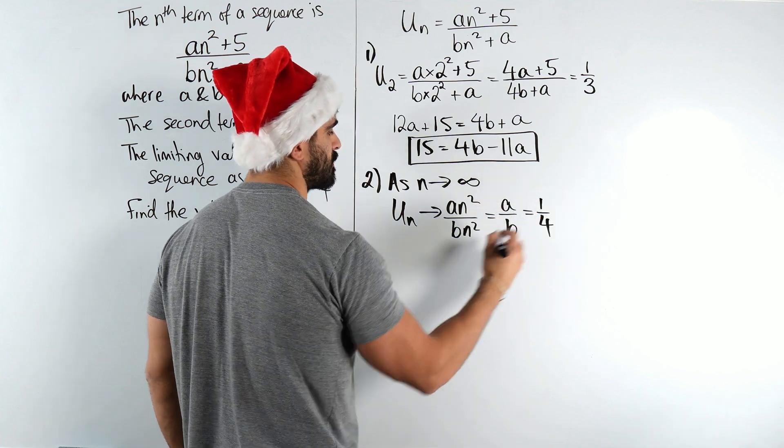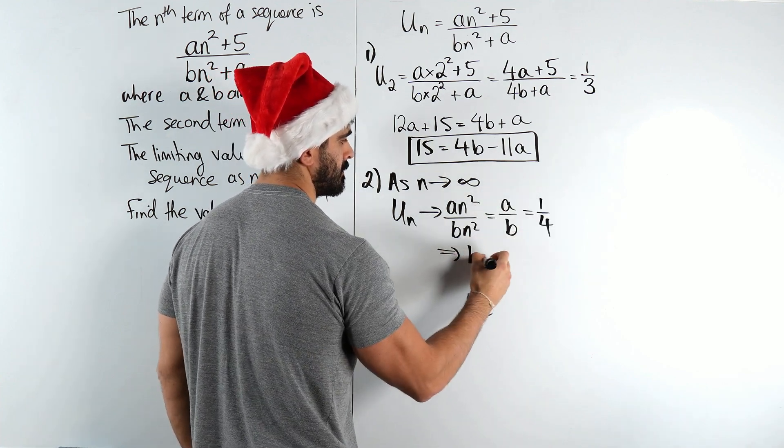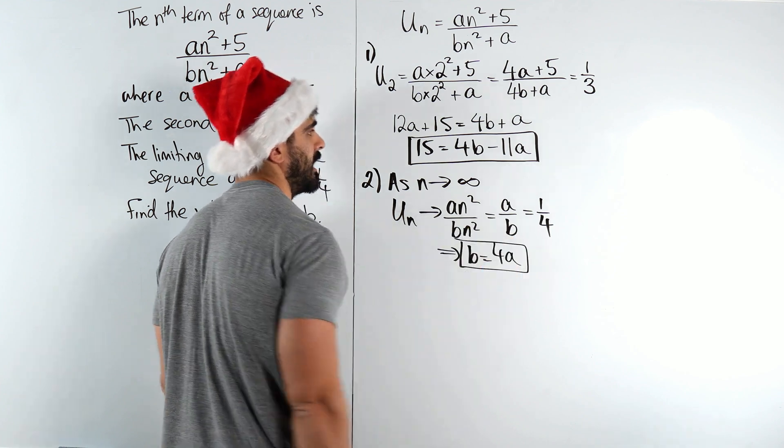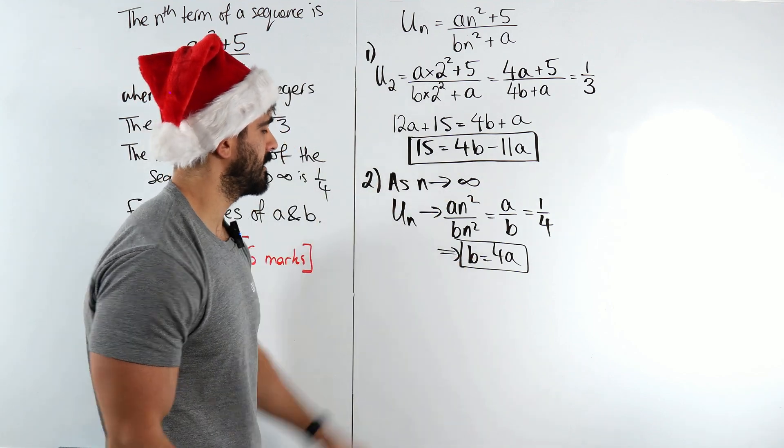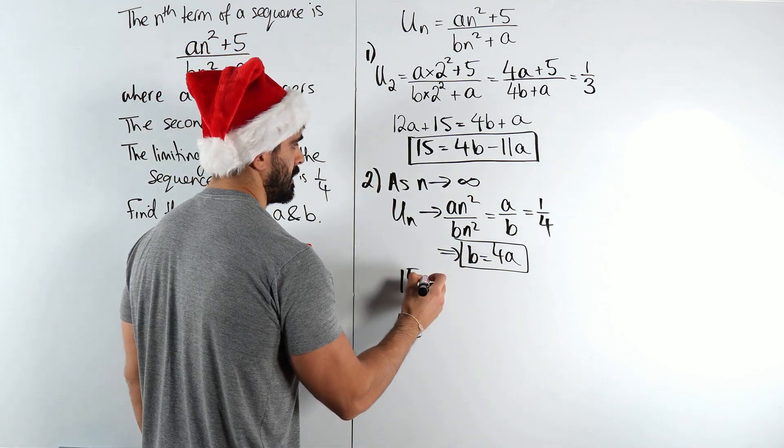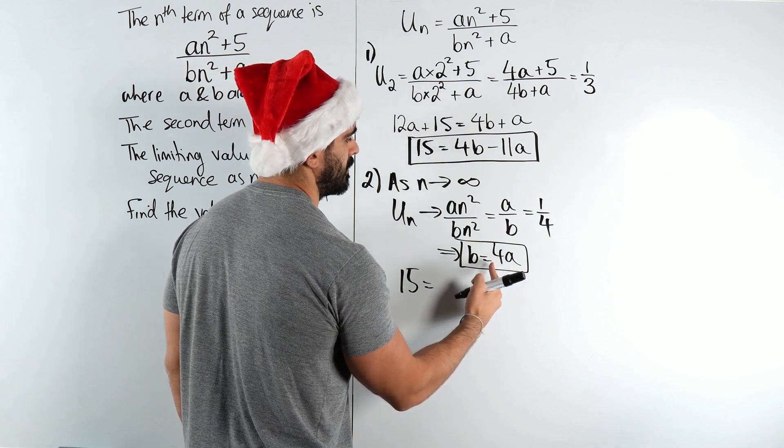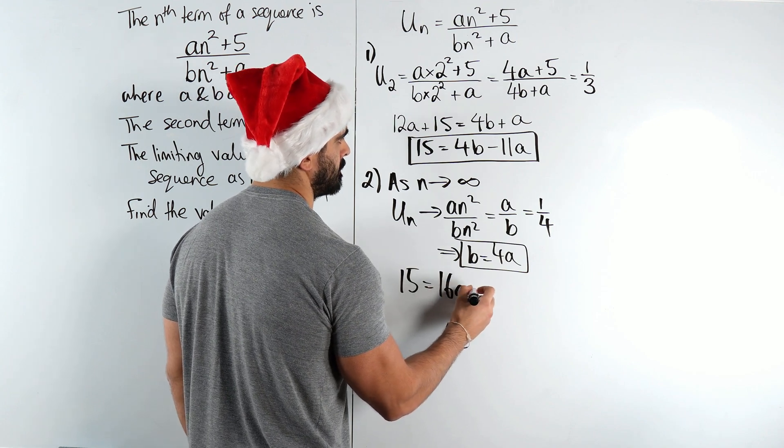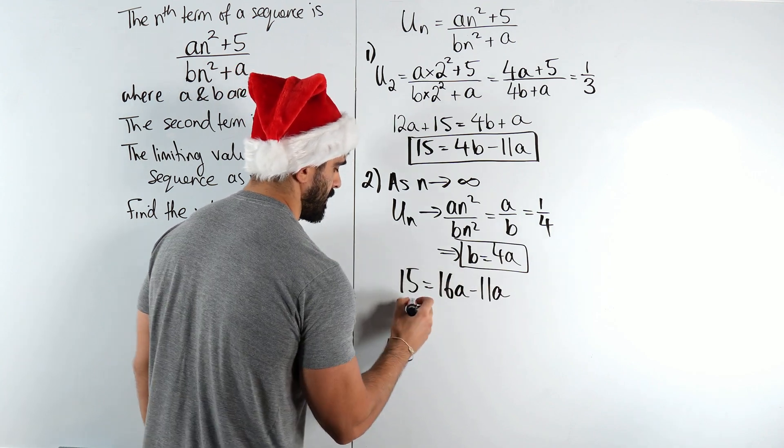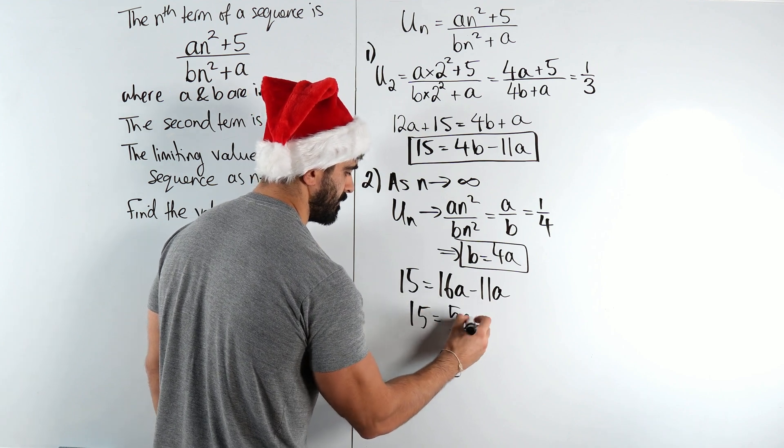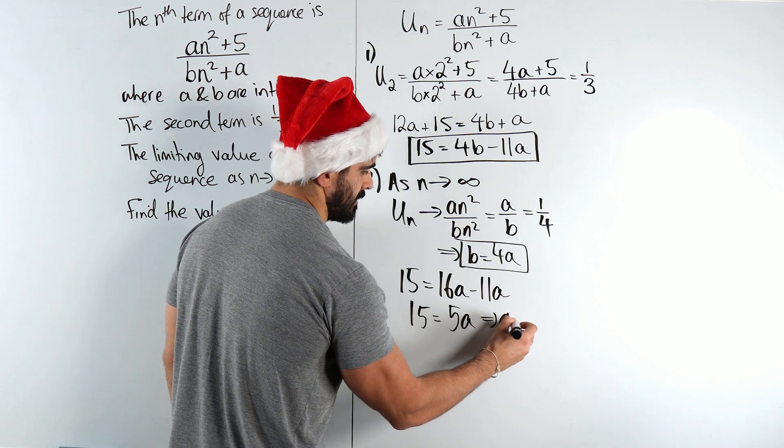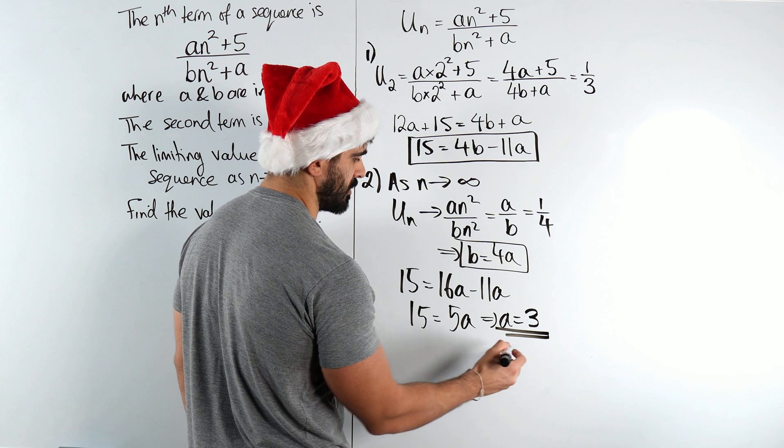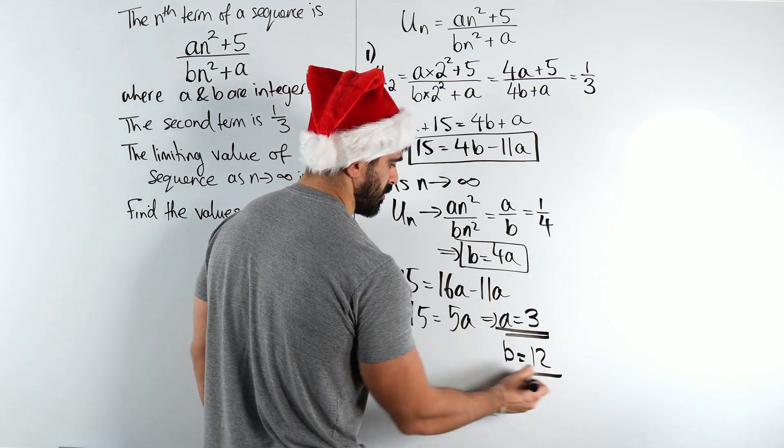Now they said that is a quarter. Sweet. So when we cross multiply, we get b = 4a. Nice. And now we solve. So we're going to plug that in there. So we get 15 = 4b, so b is 4a. When you see 15 - 11a = 16a - 11a = 5a. So a is 3. If a is 3, b is 4 times that, 12. And that is that.